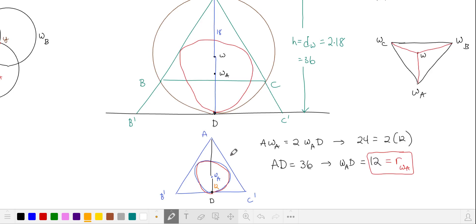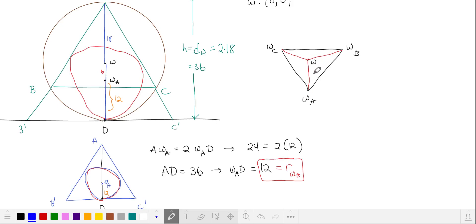So this distance is 12. This is 12. So the distance from omega to omega a is 6. Which means the distance between omega and all of our other three centers is also 6.